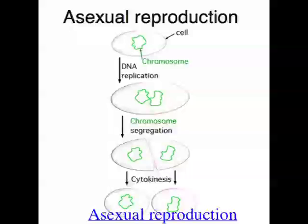Another type of asexual reproduction is vegetative reproduction, and that's basically where plants make whole new plants exactly the same as them. A good example of this is sometimes plants will send out a root along the ground or just underneath the surface, and that root will send out another shoot upwards, and then that single shoot will end up developing into another whole tree. So that's vegetative reproduction.